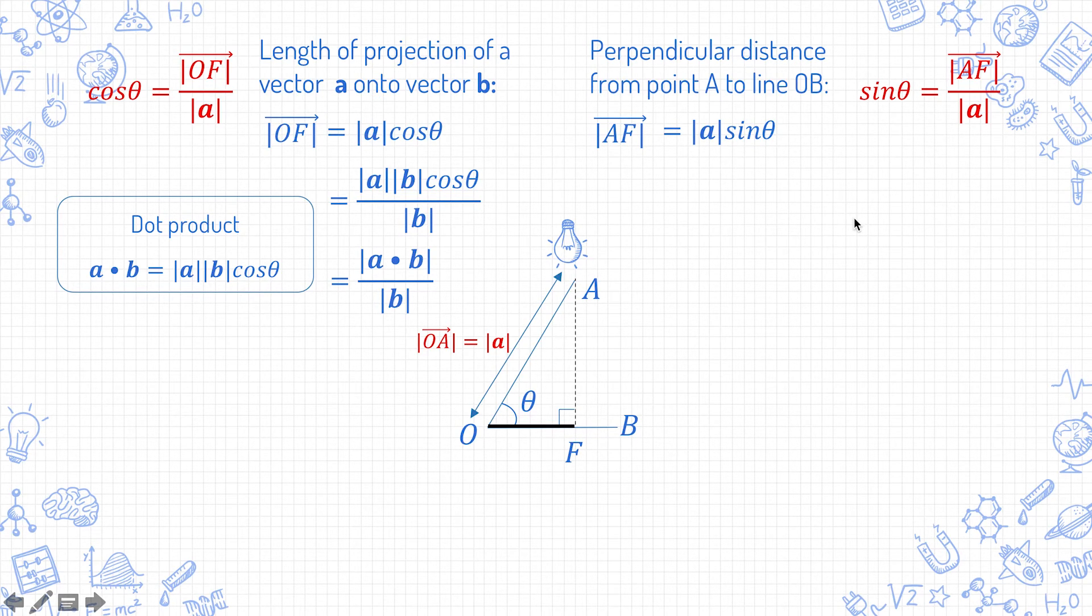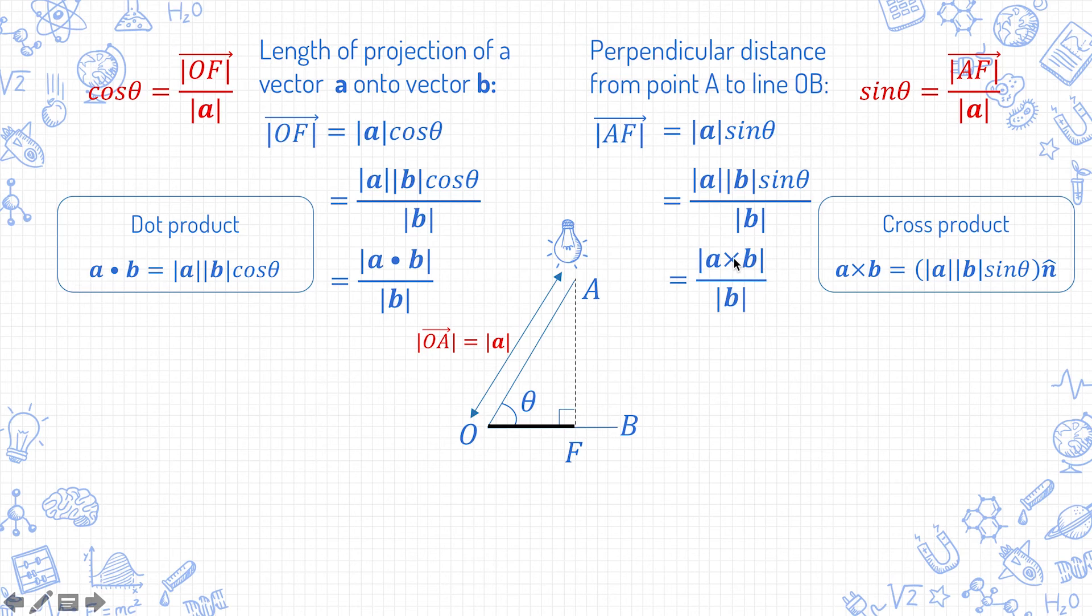Comparing this to the cross product, you can see that mod of a cross b is almost this but with the mod b. Once again, you deal with it by multiplying by mod b over mod b. Then this part here is mod of a cross b. Therefore the perpendicular distance from a point A to the line OB is mod of a cross b over mod b.